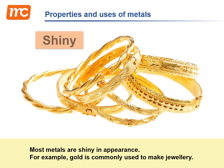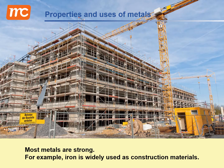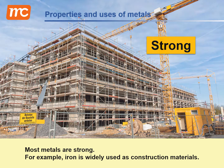Most metals are shiny in appearance. For example, gold is commonly used to make jewelry. Most metals are strong. For example, iron is widely used as construction materials.